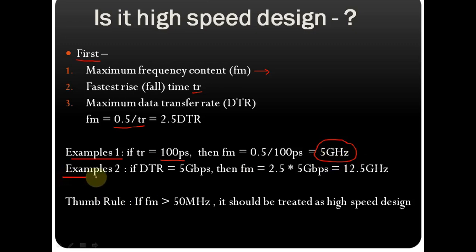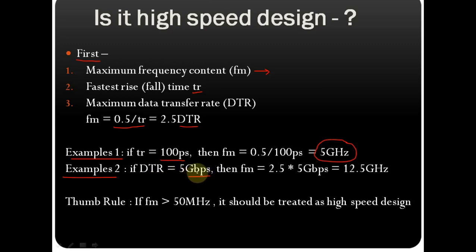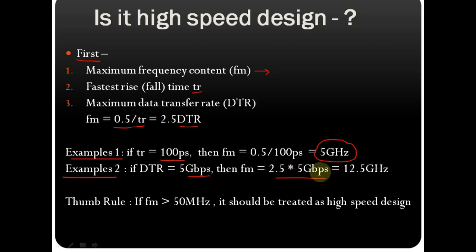For the second example, if the maximum data rate DTR equals 5 Gbps (gigabits per second), you can find the maximum frequency using: fm = 2.5 × DTR = 2.5 × 5 Gbps, which gives 12.5 gigahertz.